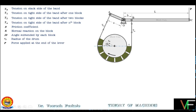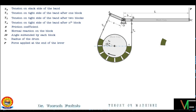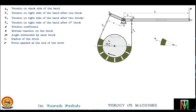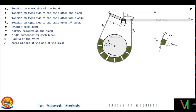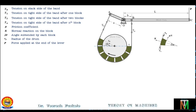Now let's consider one block and examine the forces acting on it. Each block embraces a short arc on the drum subtending an angle of 2θ at the center. The first block is in equilibrium under the following forces: the normal reaction N of the drum on the block (with angles θ on each side), tension T0 on the slack side, tension T1 on the tight side, and friction force μN. Since the drum rotates clockwise, friction on the drum is anticlockwise, so friction on the block acts in the clockwise direction — that is, in the direction of drum rotation.